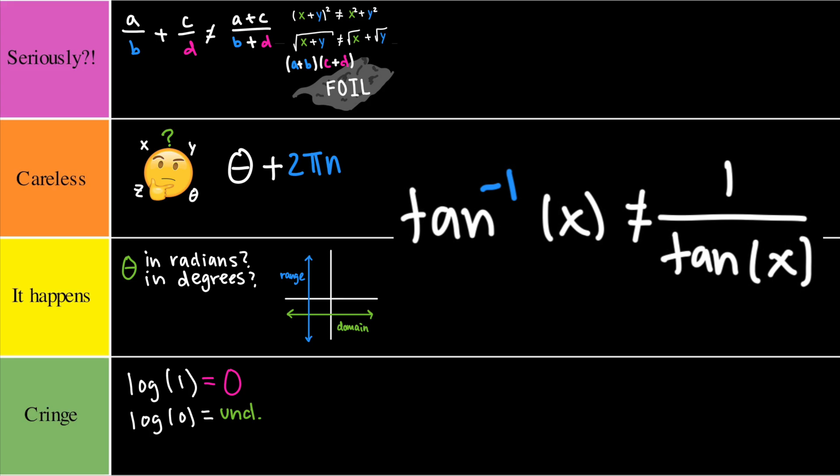Next up we have misunderstanding the inverse trig functions. So you have tangent to the power of negative 1, that is tangent inverse or arctangent. So that is not 1 over tangent x. So this would have to go into a cringe.